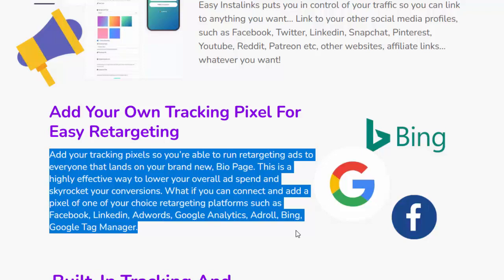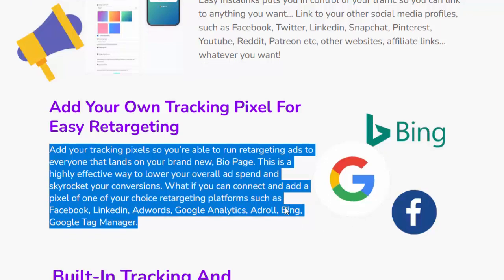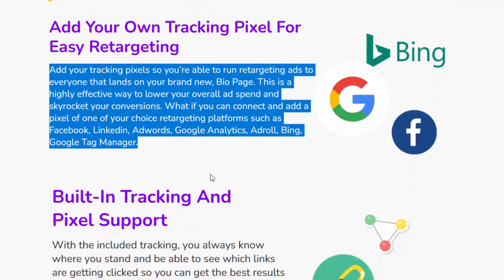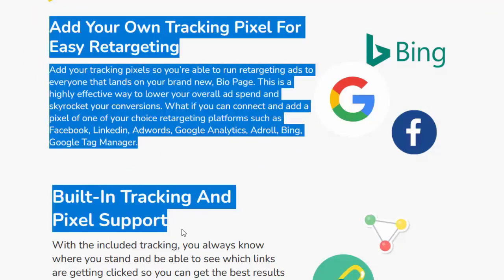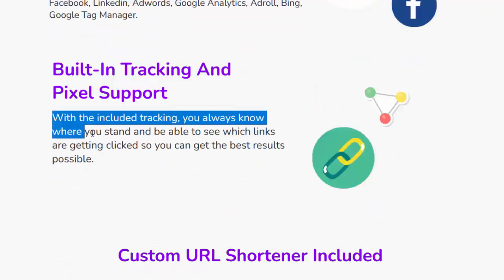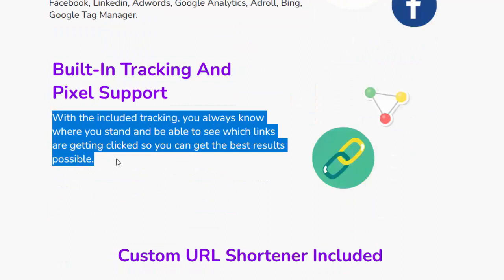You can connect and add a pixel from retargeting platforms such as Facebook, LinkedIn, AdWords, Google Analytics, AdRoll, Bing, and Google Tag Manager. With the included built-in tracking and pixel support, you always know where you stand and can see which links are getting clicked to get the best results possible.